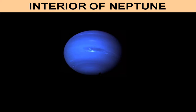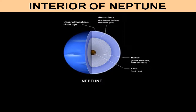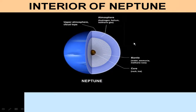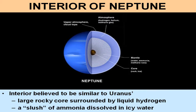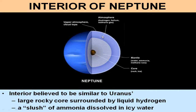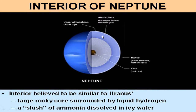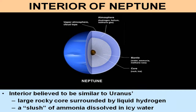If we were to look into the interior of Neptune, we would see something very similar to the interior of Uranus: a rocky core in the center, surrounded by liquid hydrogen, then a mantle comprised of a water and ammonia slush, and then an atmosphere of mainly hydrogen at about 84% and helium at about 14% — very similar to the interior and atmosphere of Uranus.